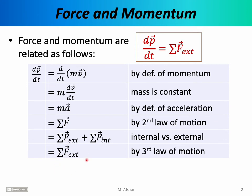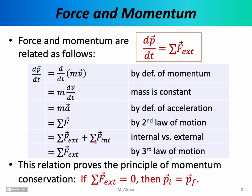If you add all of the external forces on a system, what you get is the rate of change in momentum. Recall the principle of momentum conservation: if the sum of the external forces is equal to zero, then P initial is equal to P final. Originally, when we presented this statement, we did not prove it — we simply took it as a principle, but now you can see where it comes from. The proof essentially follows from this equation: if the sum of the external forces is zero, then dP/dt will be zero. When the derivative of a function is equal to zero, that function is not changing. So momentum is not changing, momentum is constant, and therefore the initial momentum must equal the final momentum.